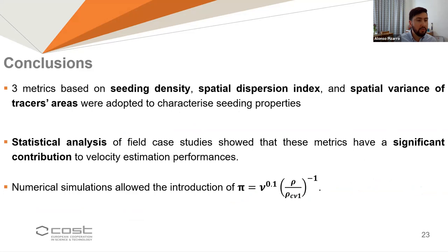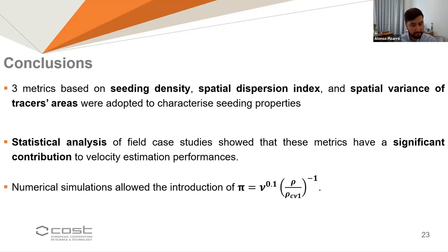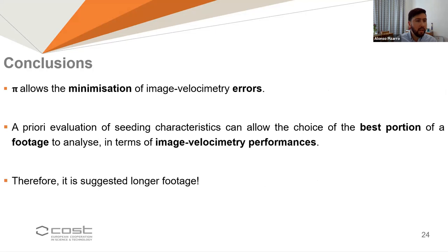As conclusions: three metrics based on seeding density, spatial dispersion index, and spatial variance of tracer areas were adopted to characterize seeding properties. Statistical analysis of field case studies showed that these metrics have a significant contribution to velocity estimation performances. Numerical simulations allowed the introduction of P, which can be calculated in practice as presented in this slide. The P parameter allows the minimization of image velocimetry errors. Pre-evaluation of seeding characteristics can allow the choice of the best portion of the footage to analyze. Therefore, I suggest capturing longer footage so you can select just the best frames within the video.